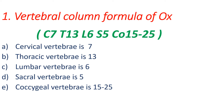Each bone that participates in the vertebral column is known as a vertebrae. All the bones that participate in the vertebral column are separately called vertebrae. In general, five types of vertebrae are discussed: cervical vertebrae, thoracic vertebrae, lumbar vertebrae, sacral vertebrae, and coccygeal vertebrae.